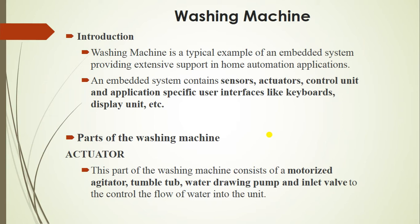Next, we are going to see the parts of the washing machine. The first part is the actuator. The actuator is used to control the washing operation. In that actuator there are some parts: motorized agitator, dump valve, water drain pump, and inlet valve. The motor agitator is used to wash your clothes. The water drain pump is used to draw the required amount of water for washing the clothes.